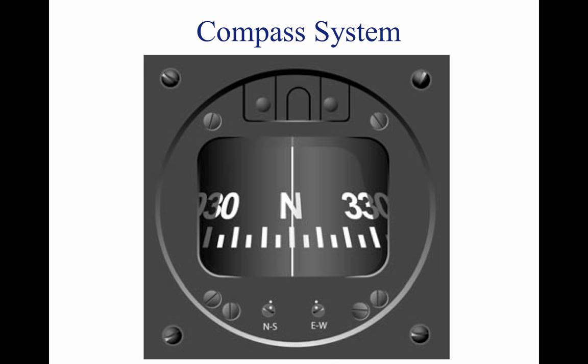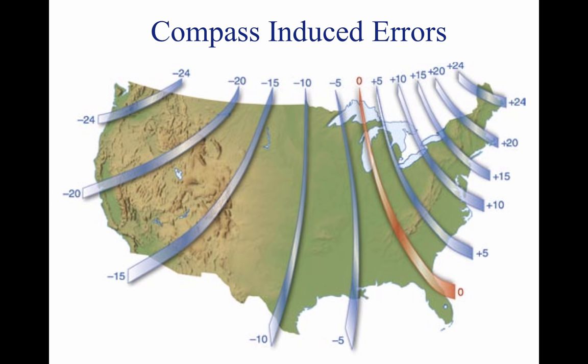The magnetic compass is the simplest instrument in the panel, but it is subject to a number of errors that must be considered. The Earth rotates about its geographic axis, and maps and charts are drawn using meridians of longitude that pass through the geographic poles. Directions measured from the geographic poles are called true directions. The magnetic north pole to which the magnetic compass points is not co-located with the geographic north pole, but is some 1,300 miles away. Directions measured from the magnetic poles are called magnetic directions. In aerial navigation, the difference between true and magnetic directions is called variation; this same angular difference in surveying and land navigation is called declination.